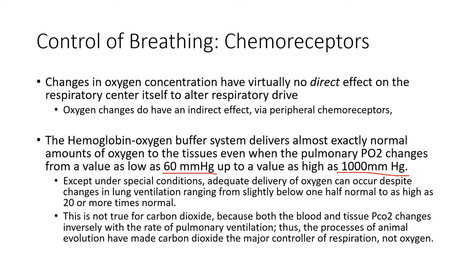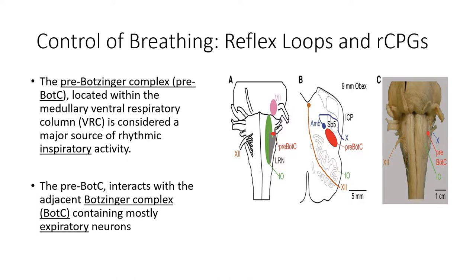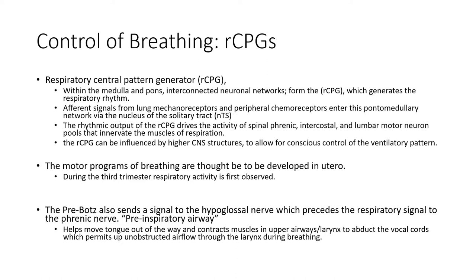All of this occurs in our pons and medulla. We have our pre-Bötzinger complexes located in the ventral rostral medulla — a major source of inspiratory activity. The pre-Bötzinger interacts with the adjacent Bötzinger complex, which contains mainly expiratory neurons. They work in unison with each other. The control of breathing is managed by the CPGs, which receive multiple inputs and process them to produce the most appropriate output or modulation to that baseline rhythm.